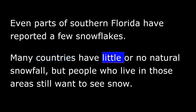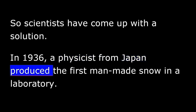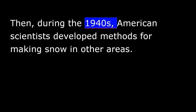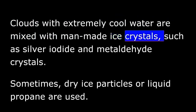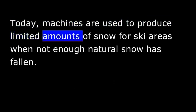Many countries have little or no natural snowfall, but people who live in those areas still want to see snow. So scientists have come up with a solution. In 1936, a physicist from Japan produced the first man-made snow in a laboratory. Then, during the 1940s, American scientists developed methods for making snow in other areas. Clouds with extremely cool water are mixed with man-made ice crystals, such as silver iodide and metaldehyde crystals. Sometimes, dry ice particles or liquid propane are used. Today, machines are used to produce limited amounts of snow for ski areas when not enough natural snow has fallen.